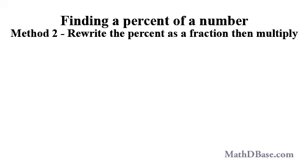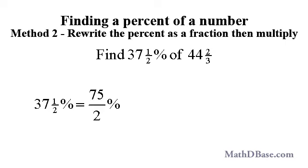In method 2, we rewrite the percent as a fraction, then multiply that fraction by the number. Let's use this method to find 37.5% of 44 and 2 thirds. First, rewrite 37.5% as 75 over 2%. For a review of how to manipulate fractions, see our fractions series.